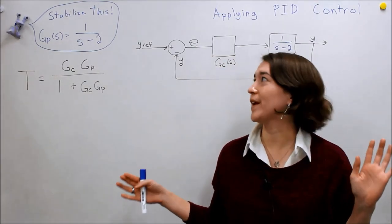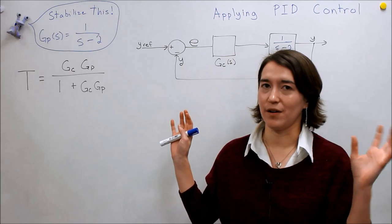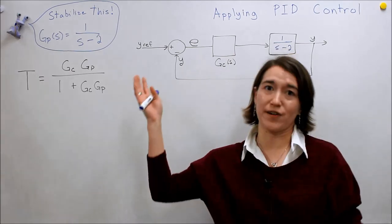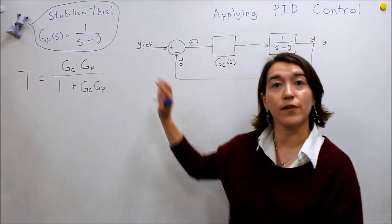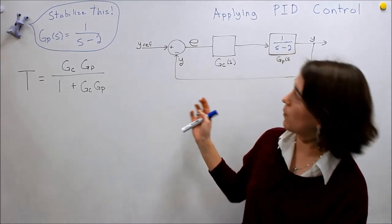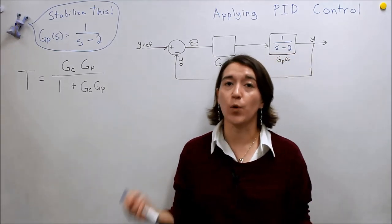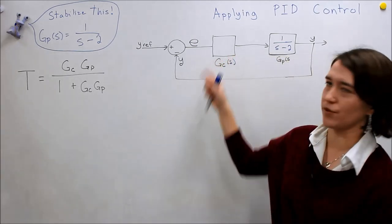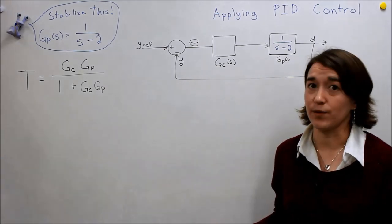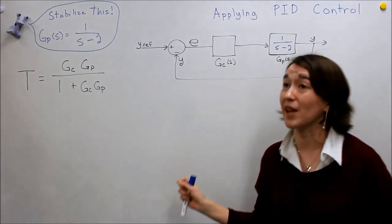Valerie demands that we now create a controller to stabilize this function. This is the plant function, 1 over s minus 2, and we previously provided a proportional control for it, and we found that it was not stable. We put a proportional control of 1, and it was not stable. So now we need to stabilize it.